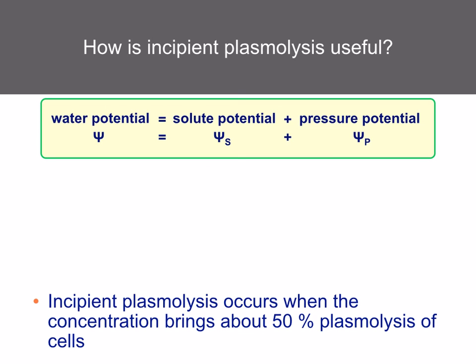How is incipient plasmolysis useful? We can use it to find the concentration or water potential within a cell. Water potential equals solute potential plus pressure potential. Incipient plasmolysis occurs when the concentration brings about 50% plasmolysis of cells — this is when the pressure potential is zero, so the water potential equals the solute potential.